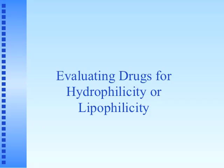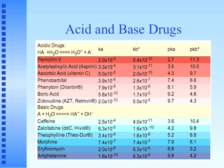We're going to continue evaluating drugs for hydrophilicity or lipophilicity, adding another twist by looking at the role of acids and bases. This graphic shows a sampling of drugs. It is often the case that we can classify drugs as being acidic or basic. Acidic drugs include penicillin V, aspirin (acetylsalicylic acid), ascorbic acid, phenobarbital, boric acid, and AZT.